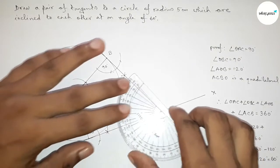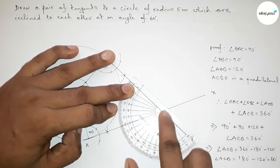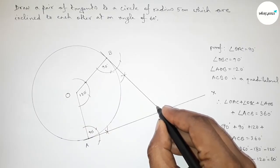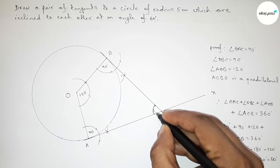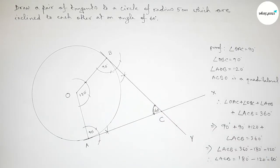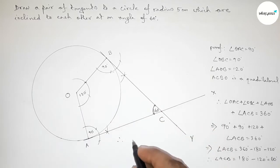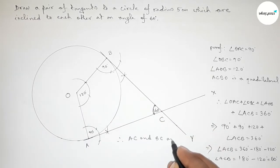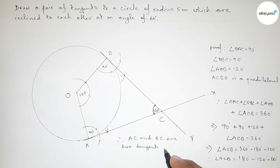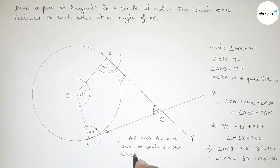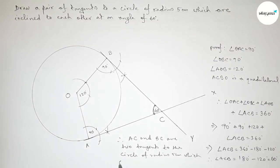Checking this angle using a protractor — putting the protractor on point C. This is a 60 degree angle, perfectly. So angle ACB equals 60 degrees. Therefore the two tangents AC and BC are inclined to each other at an angle of 60 degrees, to the circle of radius 5 centimeters.